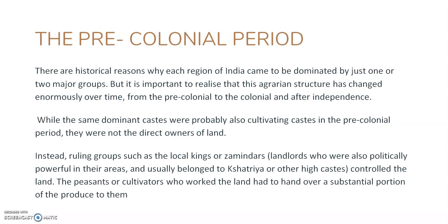Every region in India is dominated by one or perhaps two major groups, and there are historical reasons for the same. It is also important to realize that the agrarian structure — the structure of agriculture and land holding — has changed enormously over time. Changes in agriculture were observed during the colonial era, but even before the British arrived there were changes in the agrarian structure, and after independence these changes became even more vivid.